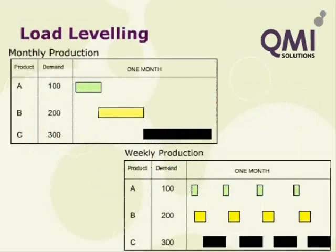The second Lean principle is to map the process. If you don't know where you're going, how will you know if you're going in the right direction? Mapping a path is critical to Lean. Lean businesses know where they are going and how they will get there. These tools help companies map, understand and improve their business processes.